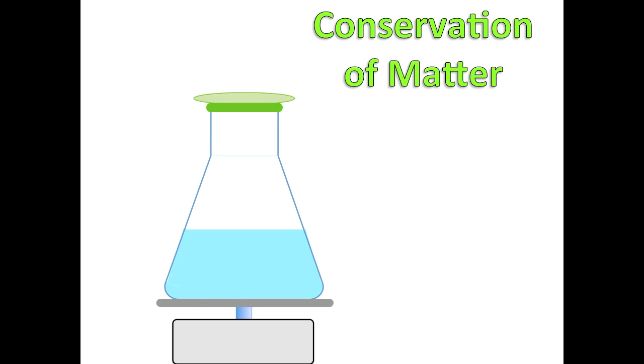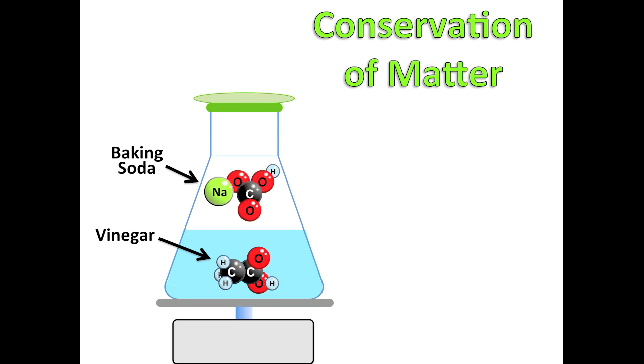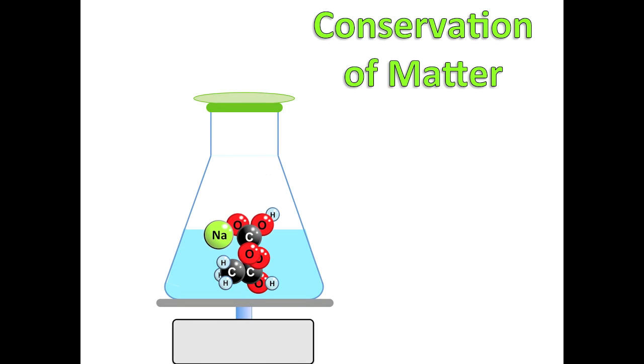Let's re-examine this reaction one more time. We used vinegar combined with baking soda. Before the reaction we measured the mass at about 200 grams. Then we allowed the two to mix, creating a new product.